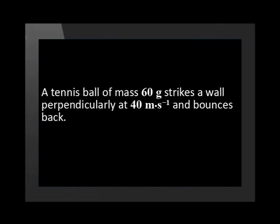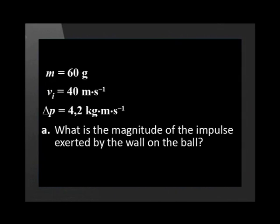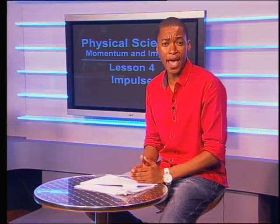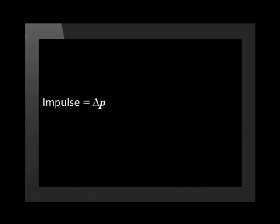Now for another example. A tennis ball of mass 60 grams strikes a wall perpendicularly at 40 meters per second and bounces back. The magnitude of its change in momentum is 4.2 kilogram meters per second. What is the magnitude of the impulse exerted by the wall on the ball? Here is the information we have. We need to find the magnitude of the impulse exerted by the wall on the ball. Remember, impulse equals change in momentum, and change in momentum is given as 4.2 kilogram meters per second.